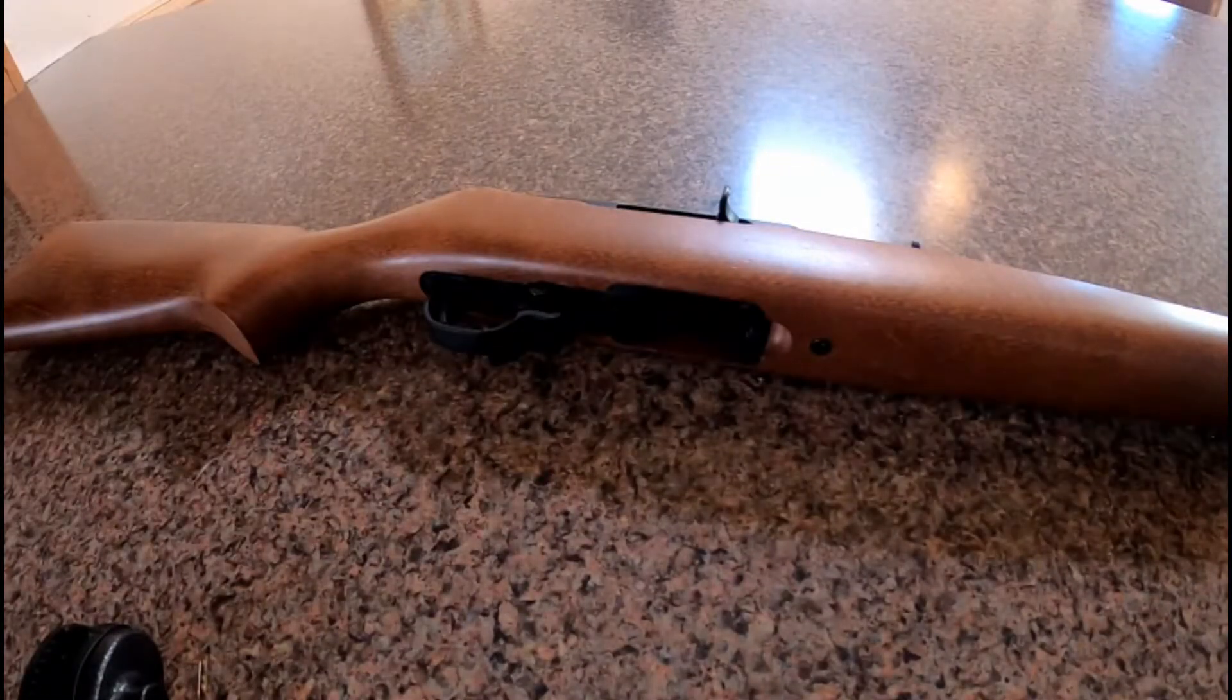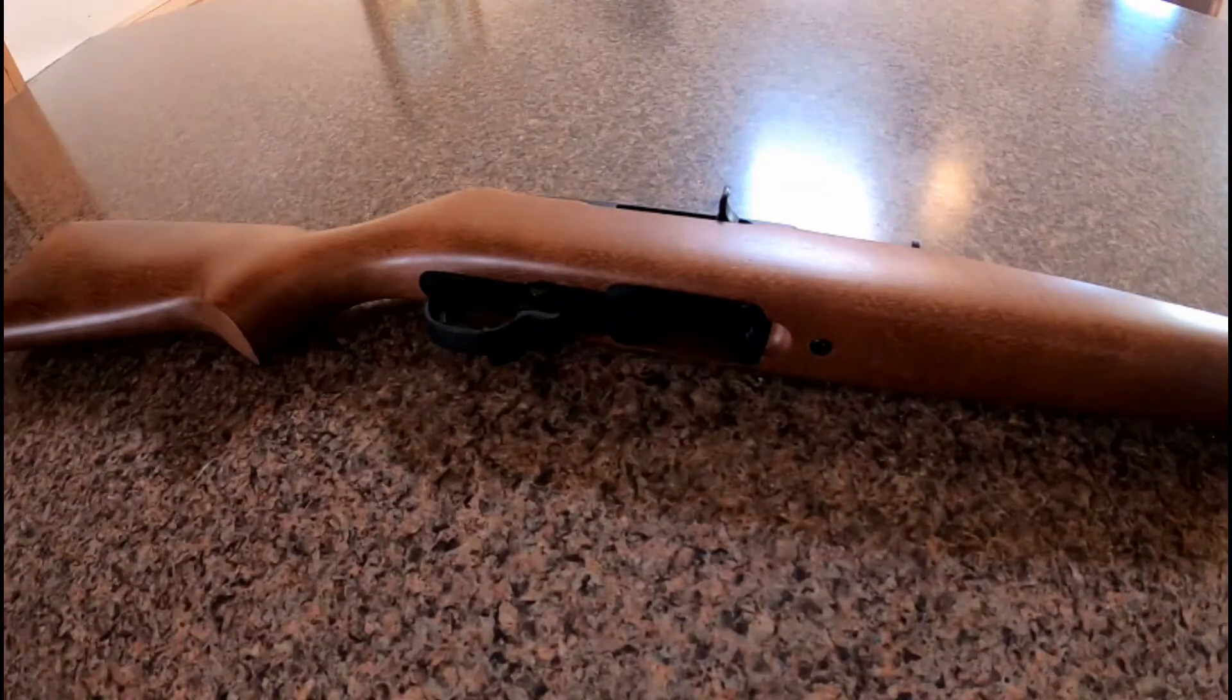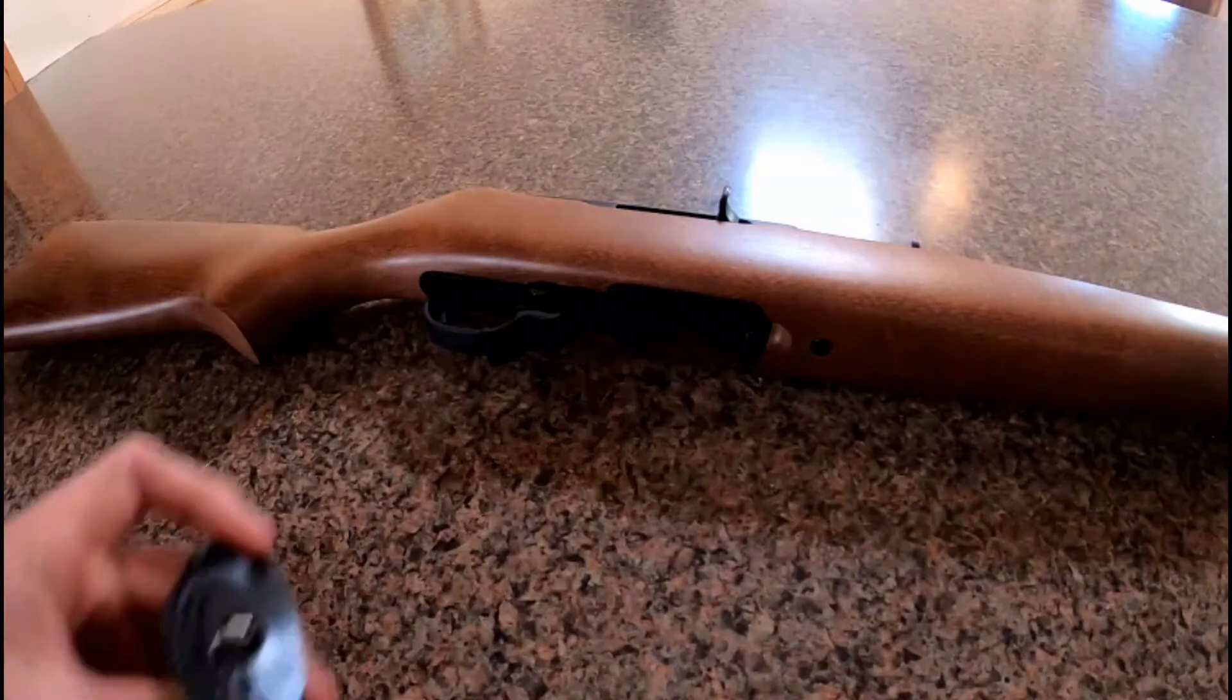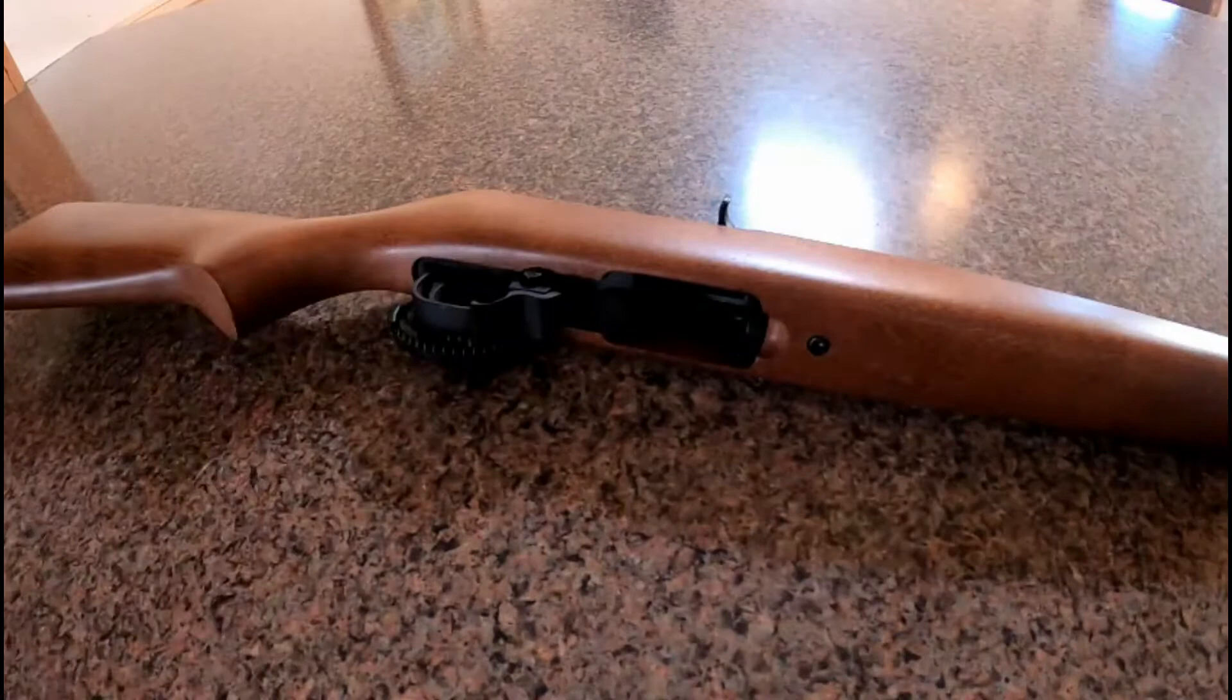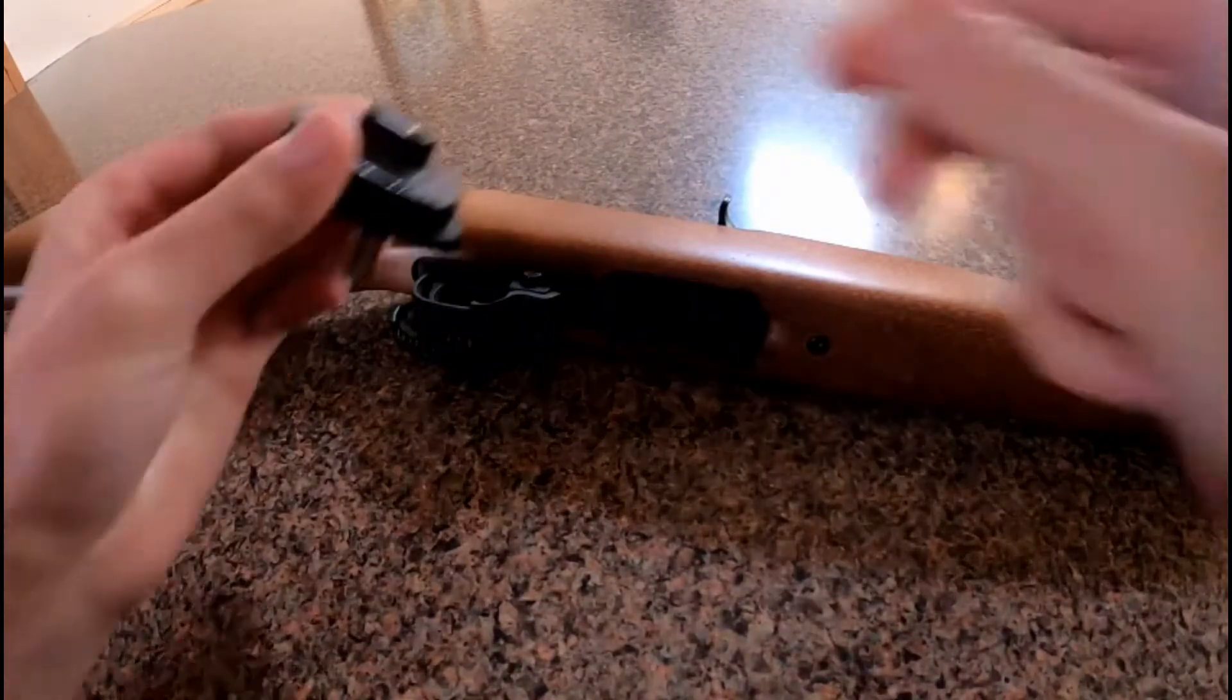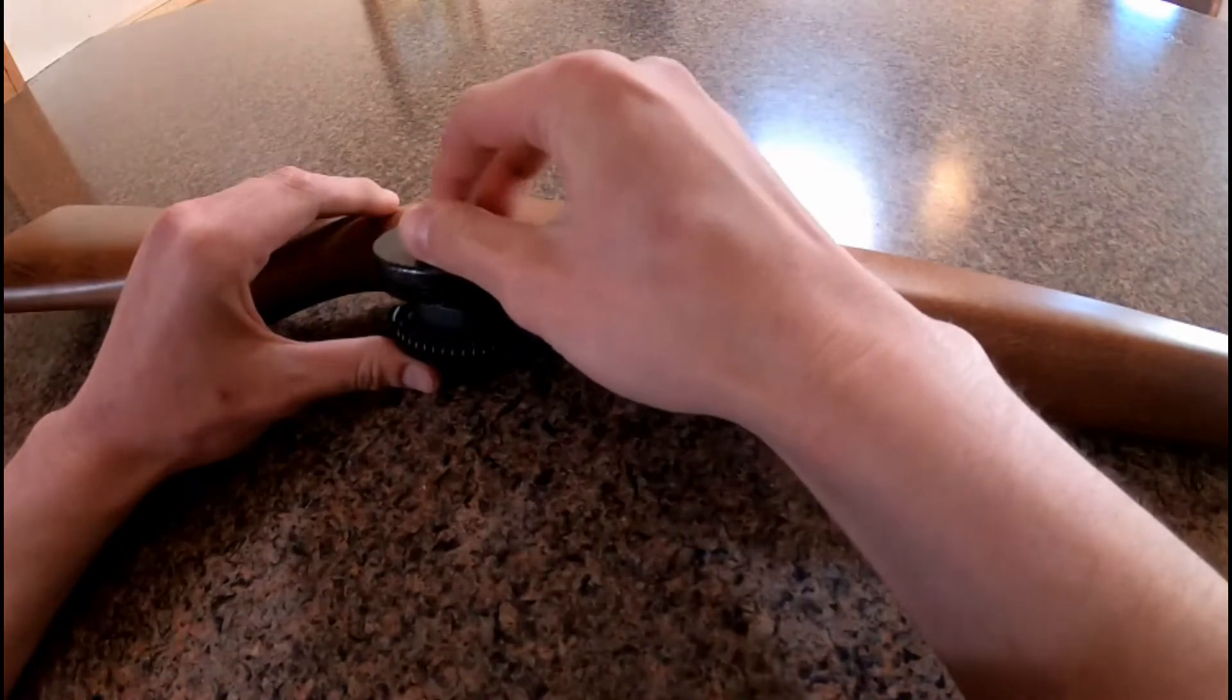Alright, now I'll demonstrate how this lock would operate on a Ruger 10-22 rifle. You take the side with the locking paw and put it on one side of the trigger, and then you take the ratchet post and you put it through the trigger assembly.